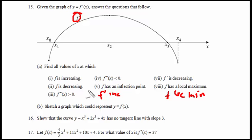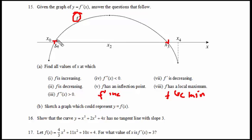Let's look at it without looking at the questions and clarify some things. This graph of f prime tells us that the slope of f is positive between x1 and x3, because f prime is above the x-axis there — so f is increasing on that interval. The slope of f is negative, so f is decreasing, between x0 and x1, and between x3 and x4. The slope is 0 at x1 and x3, so there might be a minimum or maximum at those two points.